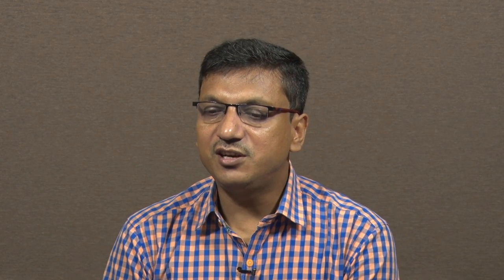Now looking into isostatic pressing: Cold Isostatic Pressing (CIP) applies fluid pressure at room temperature to a powder mass to shape it. This technique can compress powder up to 80–90 percent of theoretical density, using water or oil as the pressing medium. The pressure is applied uniformly in all directions.